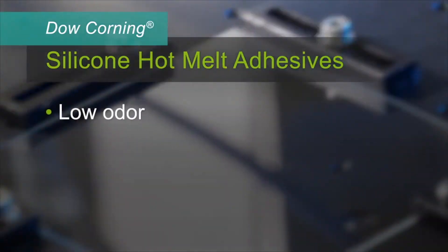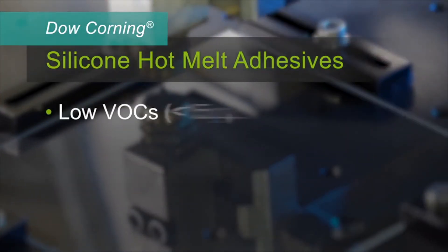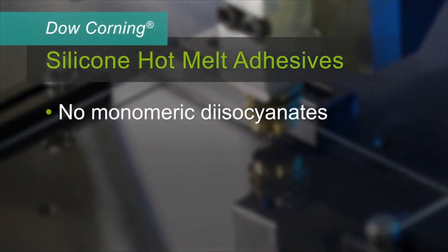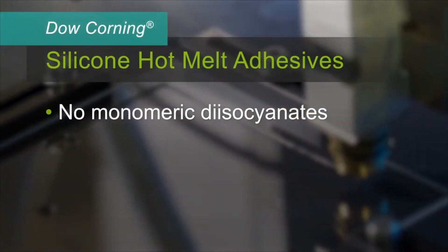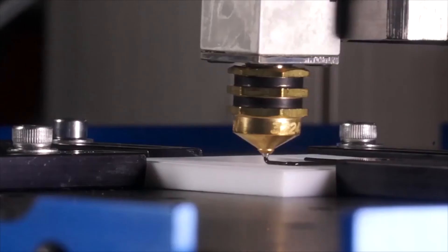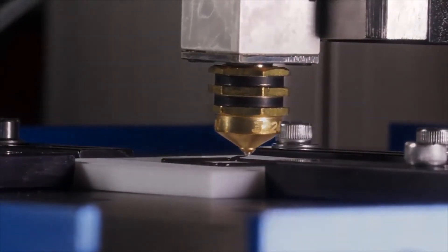Our hot melt adhesives are low in odor, have less than 15 grams per liter of volatile organic content, and don't contain skin-sensitizing monomeric diisocyanates. This may reduce some personal protective equipment requirements, but consult with the product and material safety data sheets and container labels before you determine the proper personal protective equipment for your application.